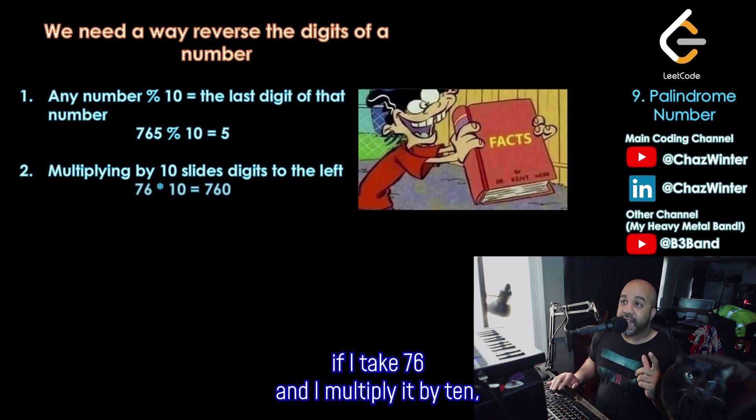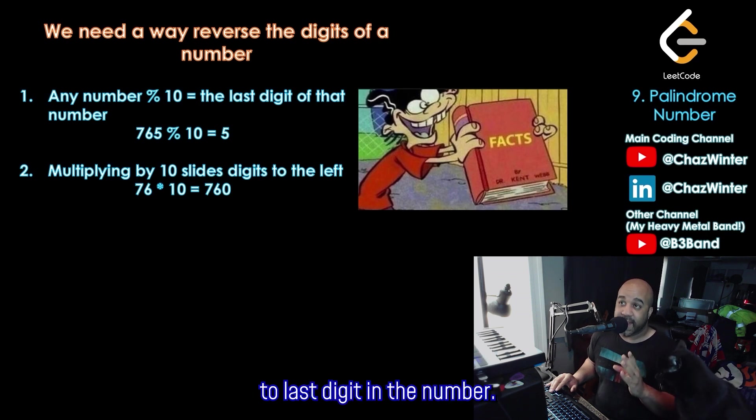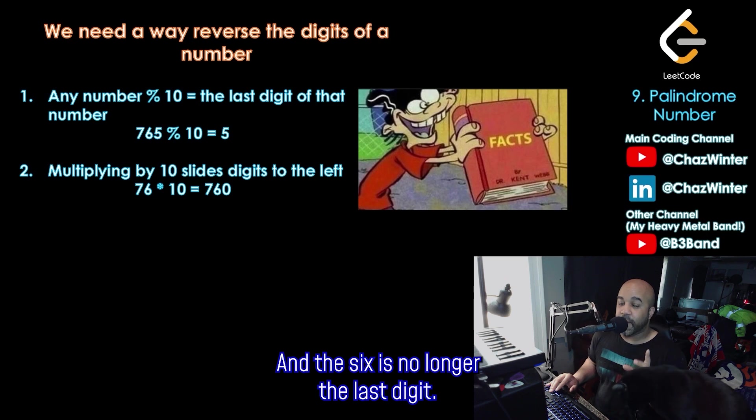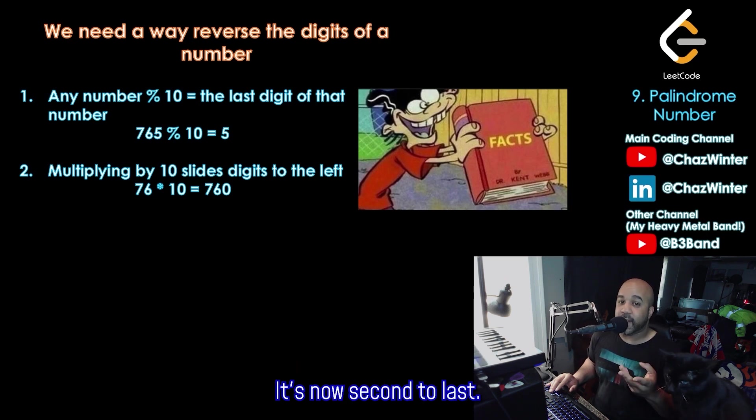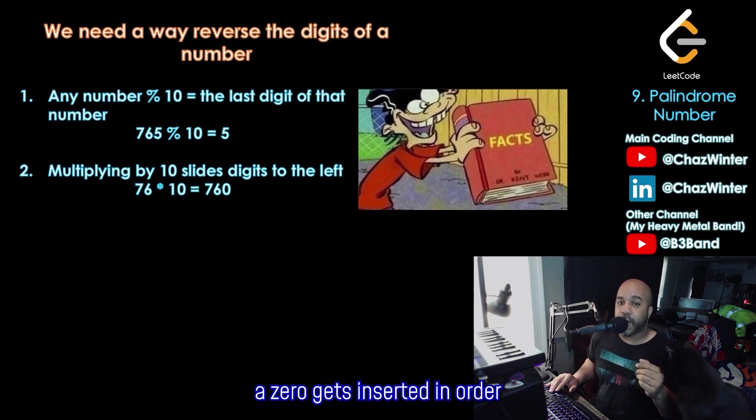The second fact that I will present is that multiplying by 10 essentially slides digits to the left. So as an example, if I take 76 and I multiply it by 10, obviously I get 760, but more importantly for us, the 7 is no longer the second to last digit in the number. It's now the third to last. And the 6 is no longer the last digit. It's now second to last. Everything shifts over, and then of course a 0 gets inserted in order to make that work.